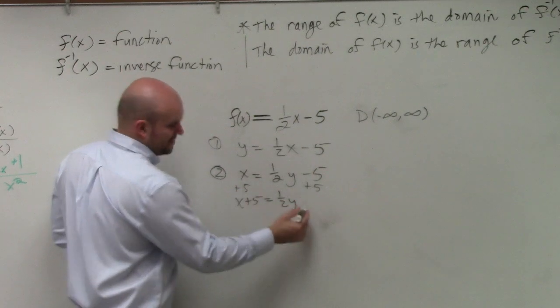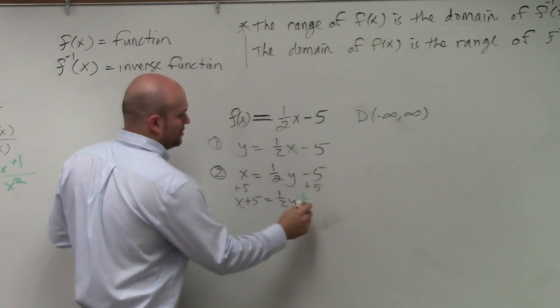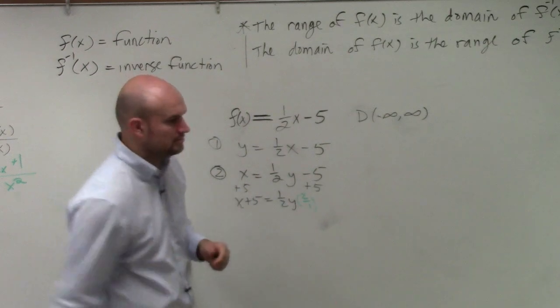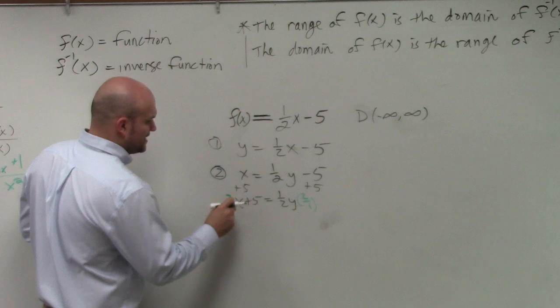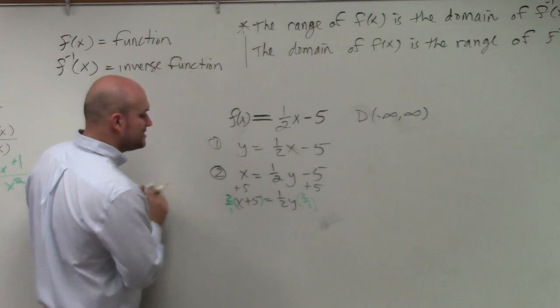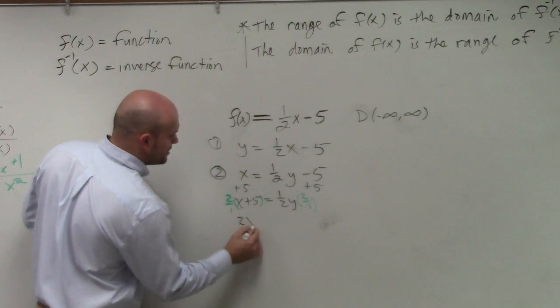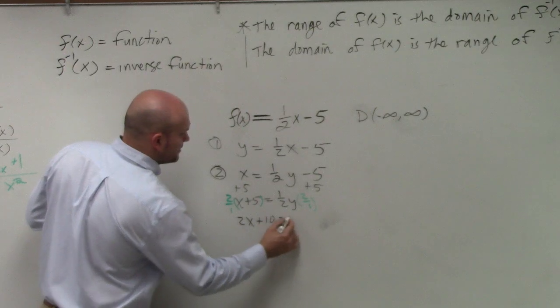x plus 5 equals 1 half y. How do you get rid of a fraction? You multiply by the reciprocal. Make sure when you multiply on both sides, you put that in parentheses. So therefore, that becomes 2x plus 10 equals y.